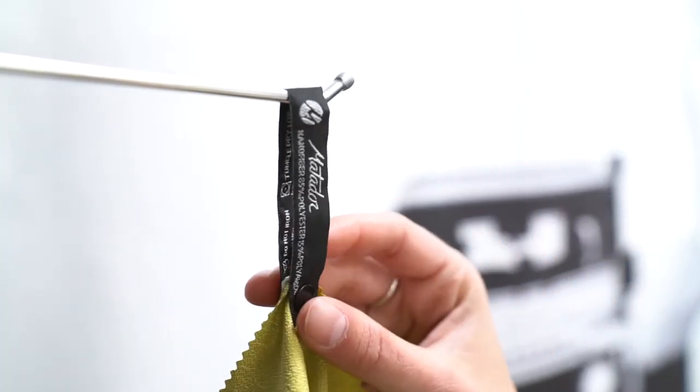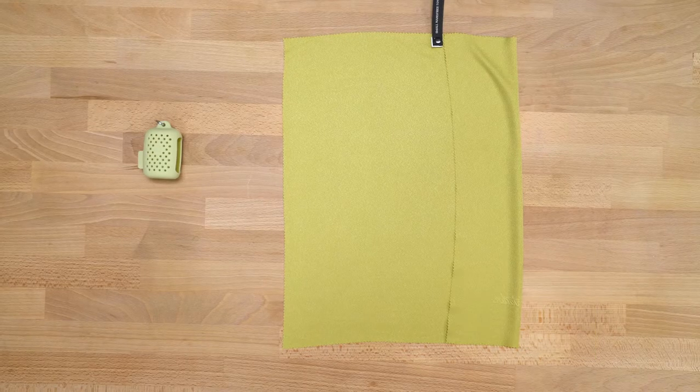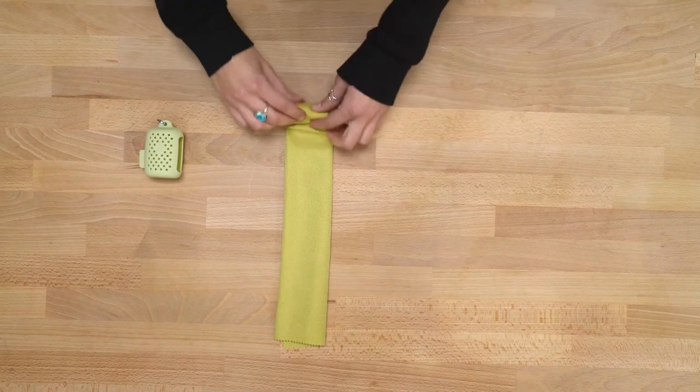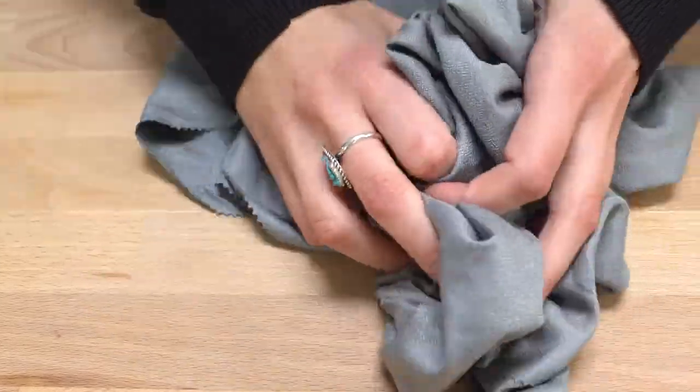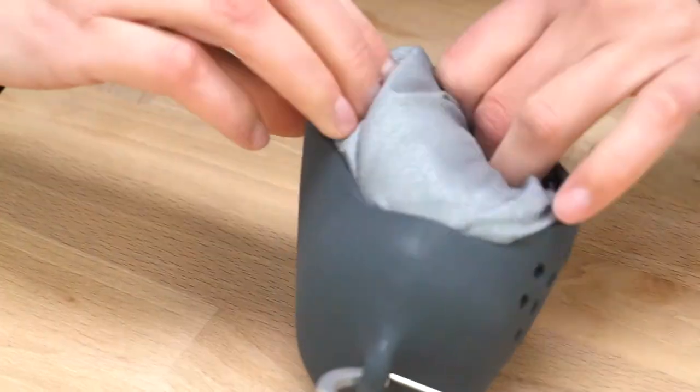The snap loop is included so you can hang dry. Simply fold up the towel when you're done with it and pack it into its carrying case. If you're in a rush, you can also stuff the towel back into its case without folding it.